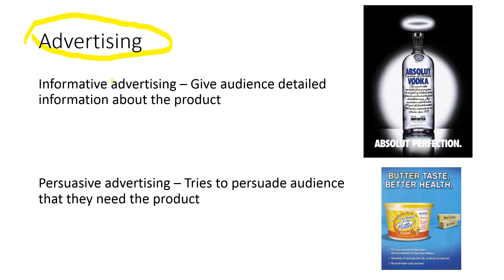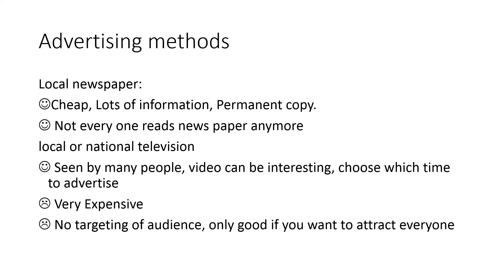Informative advertising gives the audience detailed information about the product — for example, a bottle of Absolut Vodka with 'Absolut Perfection' and loads of information. This can be boring and not many people will read it. Persuasive advertising tries to persuade the audience that they need the product — for example, a butter advert saying 'better taste, better health' persuades people that the butter is good for their health.